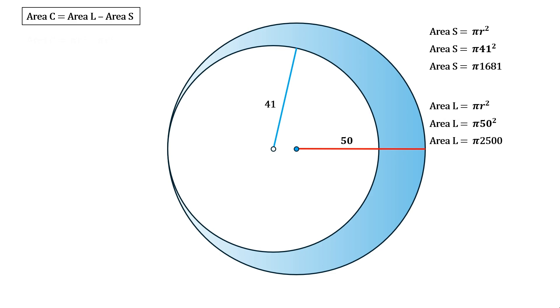Now we're ready to solve the problem. The area of the crescent shape is the area of the larger circle minus the area of the smaller circle, which is 2500 pi minus 1681 pi, which gives us 819 pi or 2572.96 square units (to two decimal places). Awesome question.